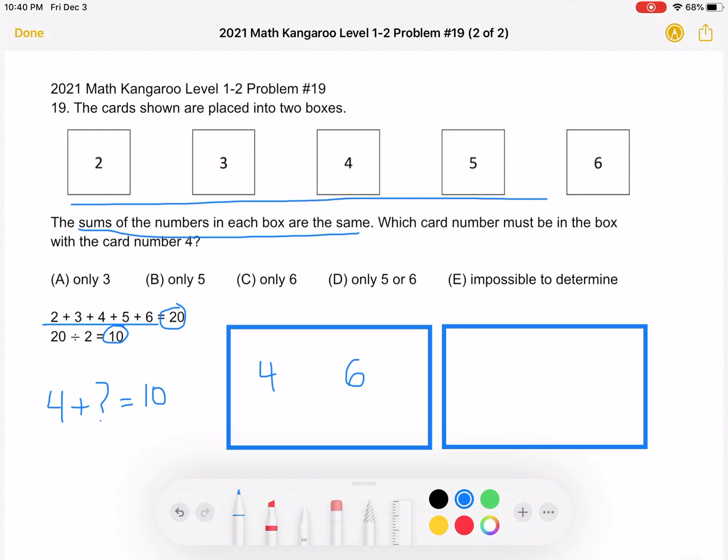If we look at our cards over here, there's no other way to choose two cards other than 4 to make 6.